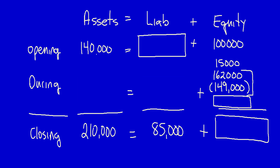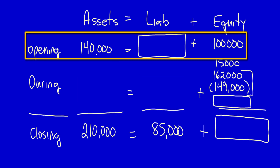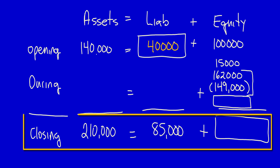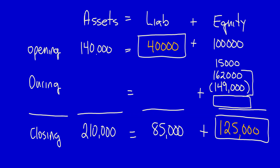The easy things are the rows. Assets equals liabilities plus equity, so assets minus equity equals liabilities: beginning liabilities are $40,000. For the closing period, assets minus liabilities equals equity: ending equity is therefore $125,000. I'm going to use the column to calculate the unknown number. I'll take beginning equity, add contributions by owners, add revenue, and subtract expenses.